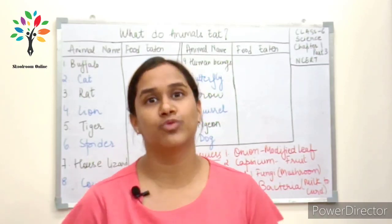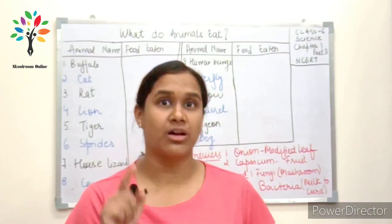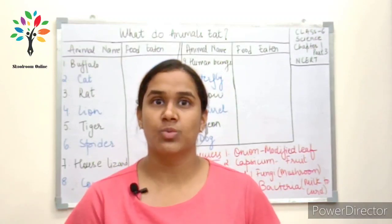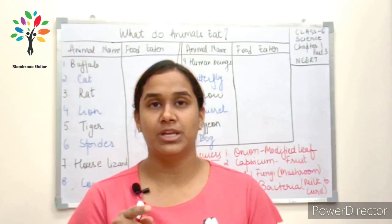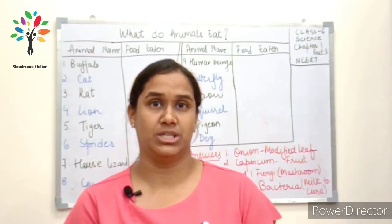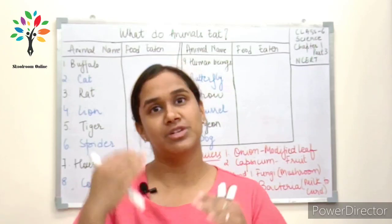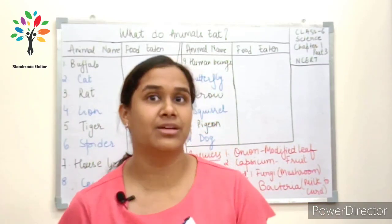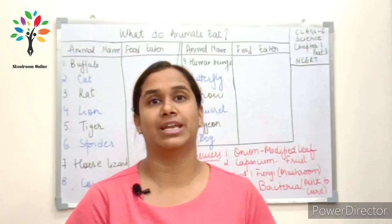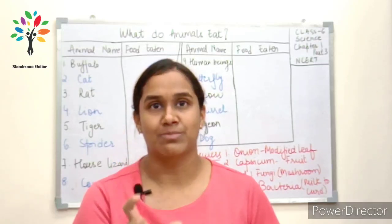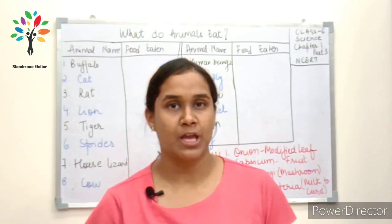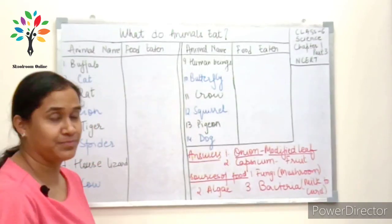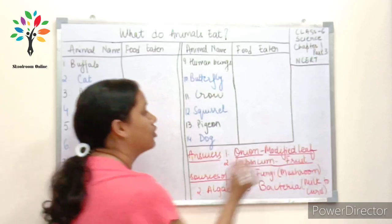Before moving on, I want to give out the answers to the questions I had asked in the second video. The first question was: which part of the plant are capsicum and onion? In the table we were filling with ingredients, I had left onion and capsicum blank. So — onion is a modified leaf, and capsicum is a fruit.